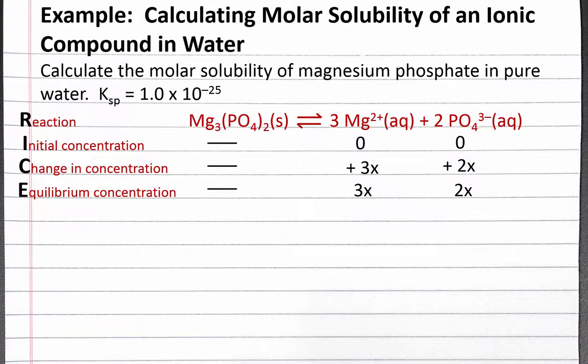For our equilibrium constant expression, the equilibrium constant equals the concentration of our products raised to the power of their coefficients, divided by the concentration of our reactants raised to the power of their coefficients. Since our reactant is a solid, it doesn't show up in the equilibrium constant expression. So our solubility constant expression is just the concentration of magnesium ions raised to the third power, times the concentration of phosphate ions squared.